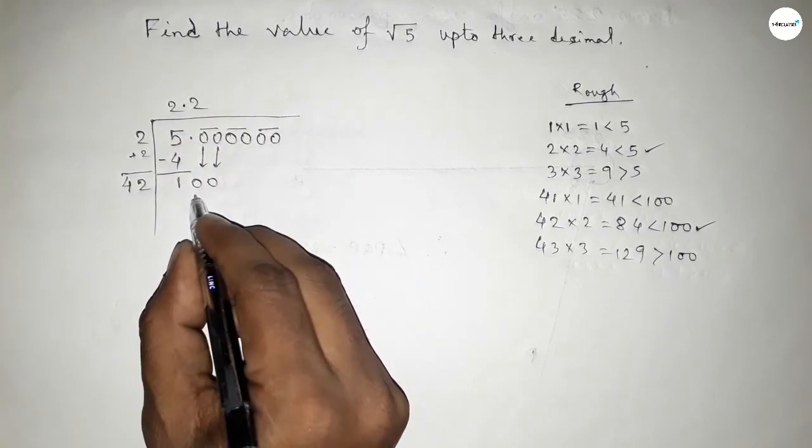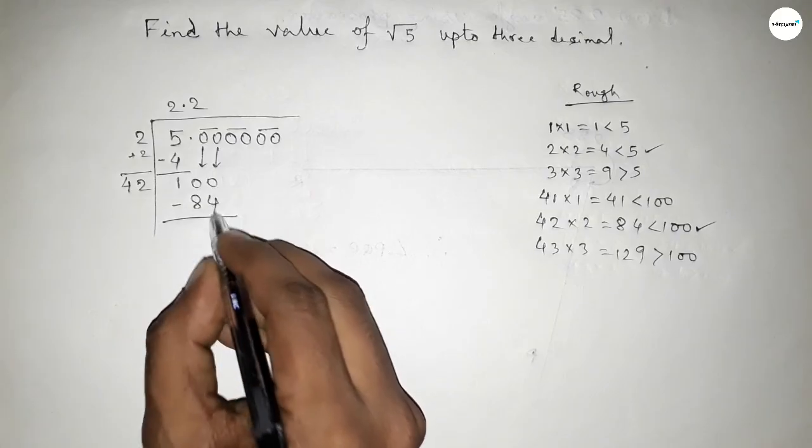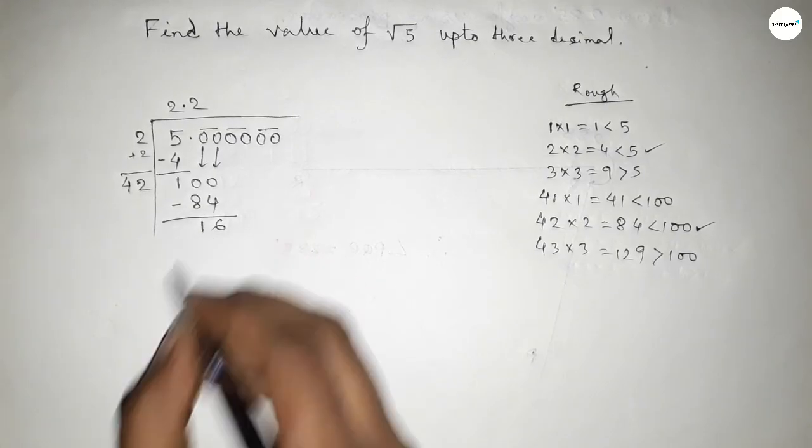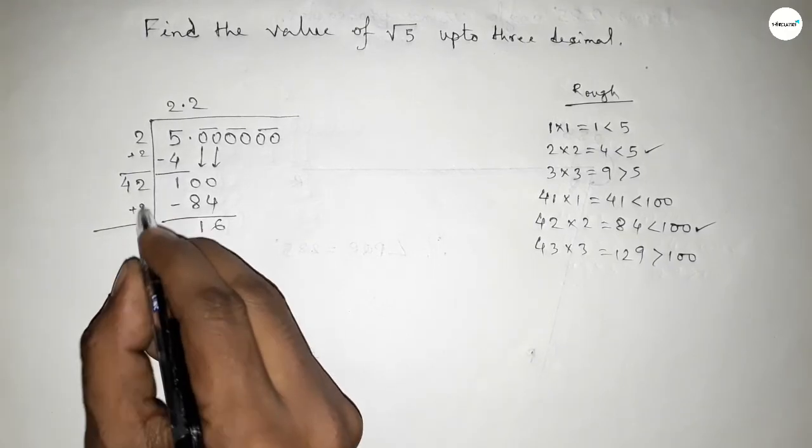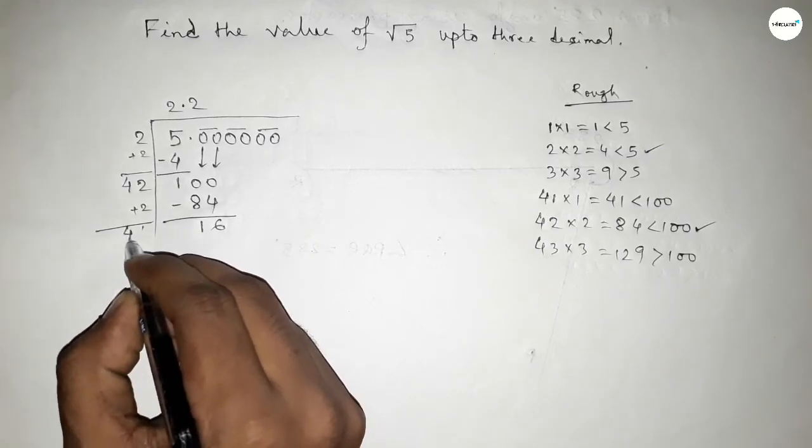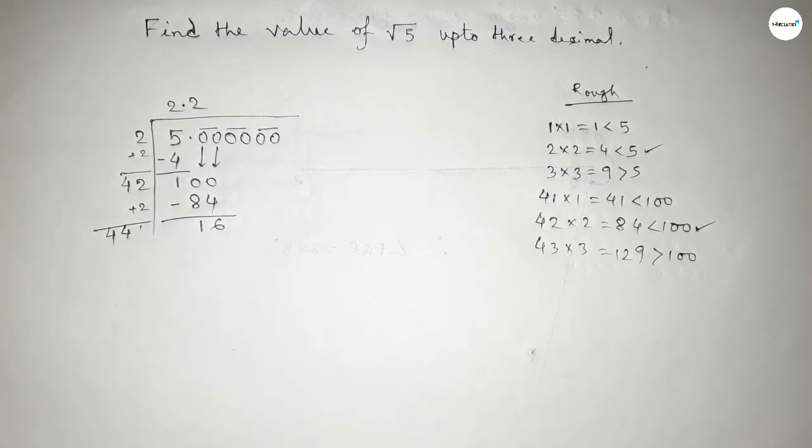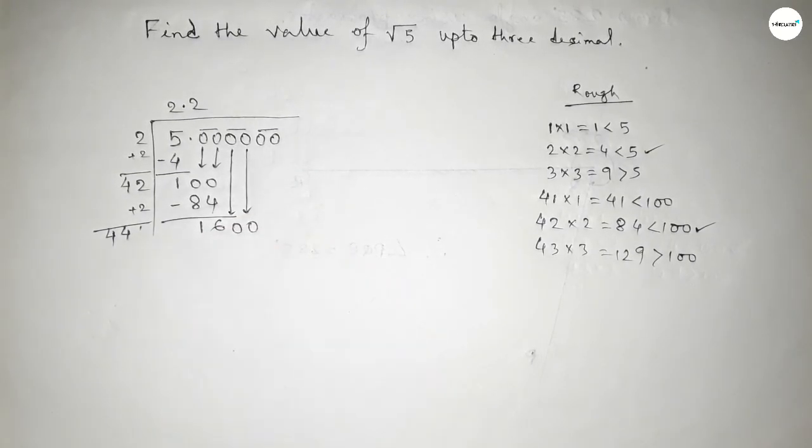So this is 84. Now subtracting this, so this is 16. Similarly adding the last digit here, the last digit is 2, so adding 2. So this is 44 and write down here the pair of 0.